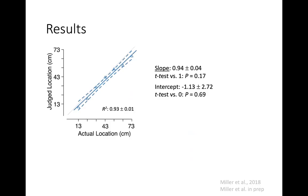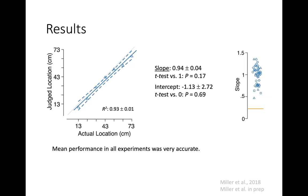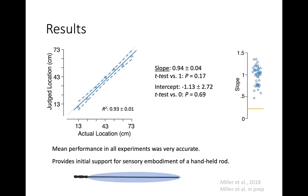Contrary to what we thought, participants were extremely good at this task. The slope of their regression line was not statistically significantly different from one — it was actually 0.94 — and the intercept was not statistically significantly different from zero. We've collected over a hundred participants on similar variations of this task, and in aggregate, the average slope is around 0.95. Mean performance across all experiments is just very accurate, providing initial support for sensory extension of a handheld rod.